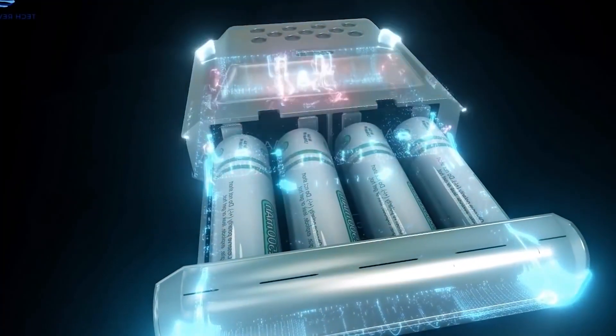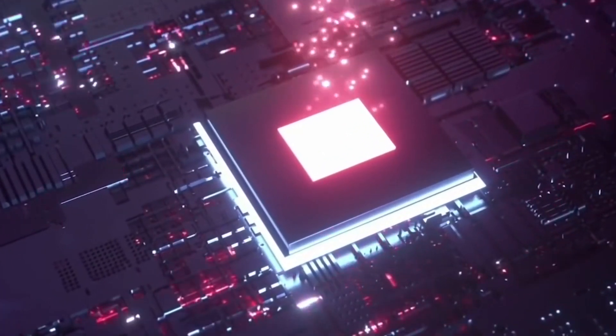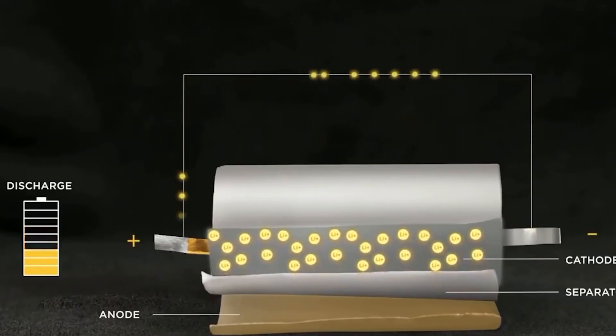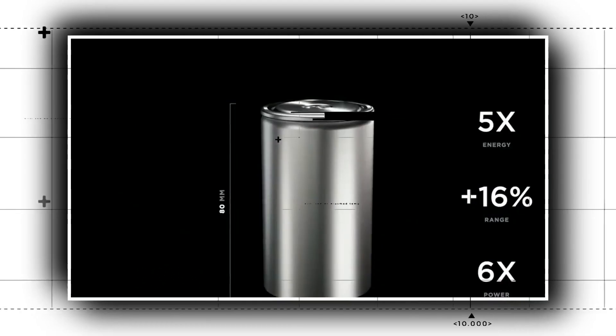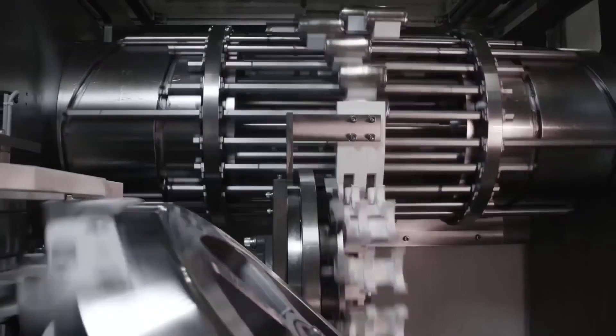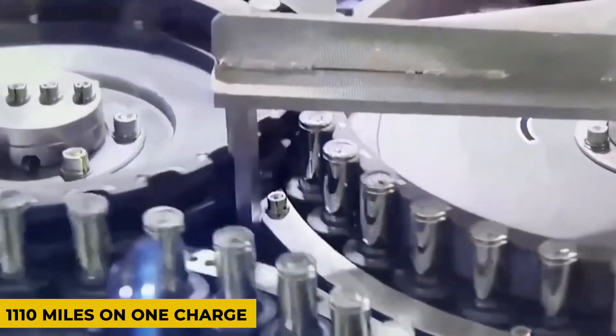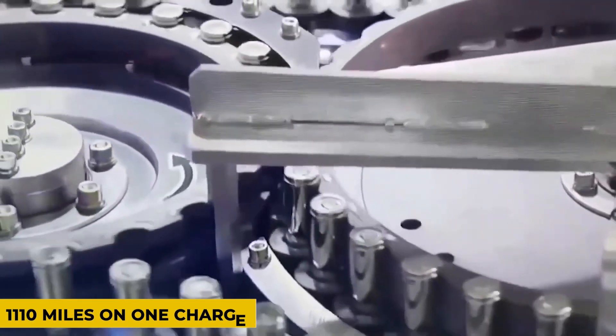Graphene aluminum ion batteries will force other battery manufacturers to change because of their great advantages. According to GMG, who claims that their batteries can charge up to 80 times faster than the best lithium-ion alternatives now on the market, graphene aluminum ion batteries may charge in as little as 10 seconds and provide a range of more than 1,110 miles on a single charge.